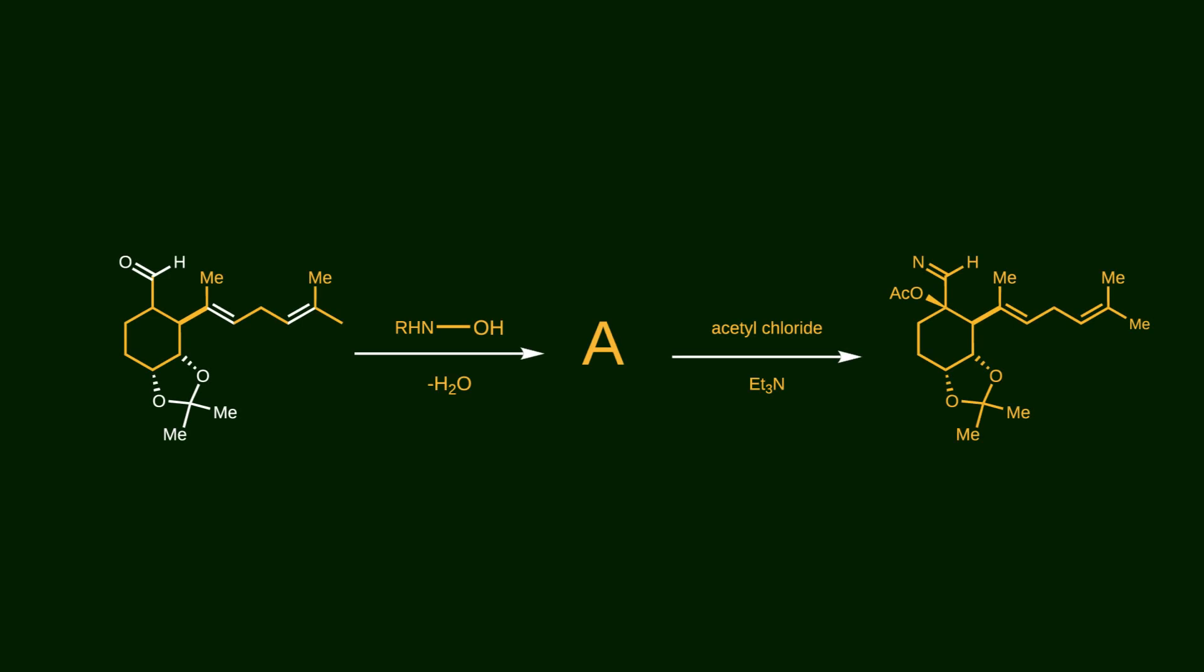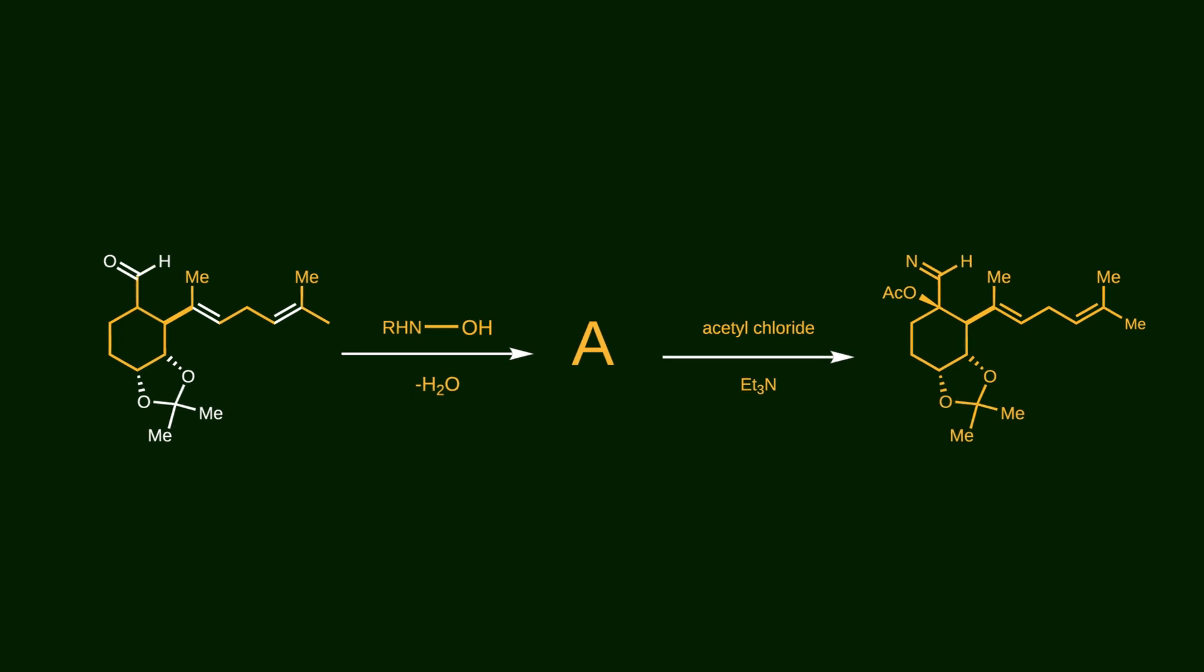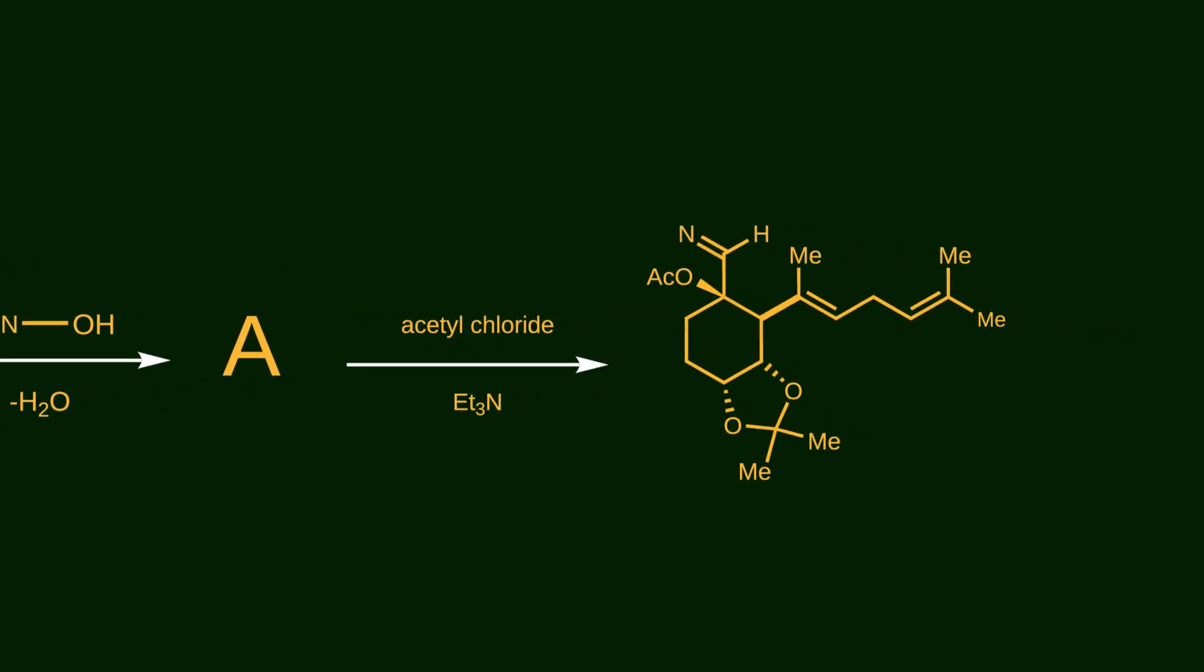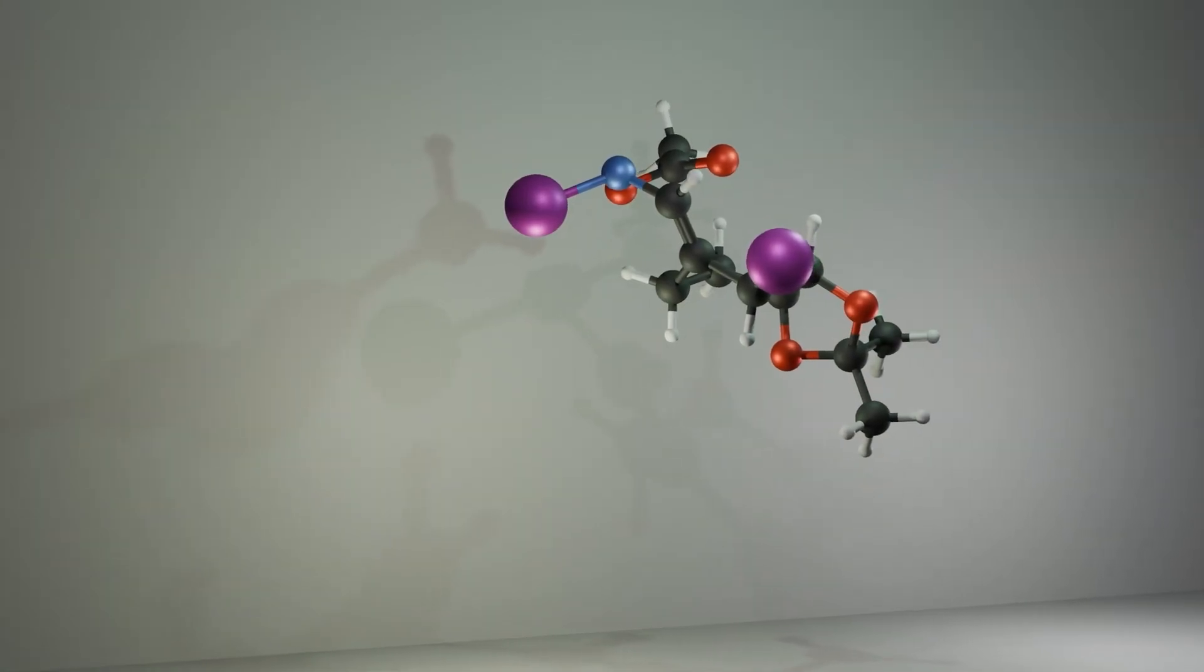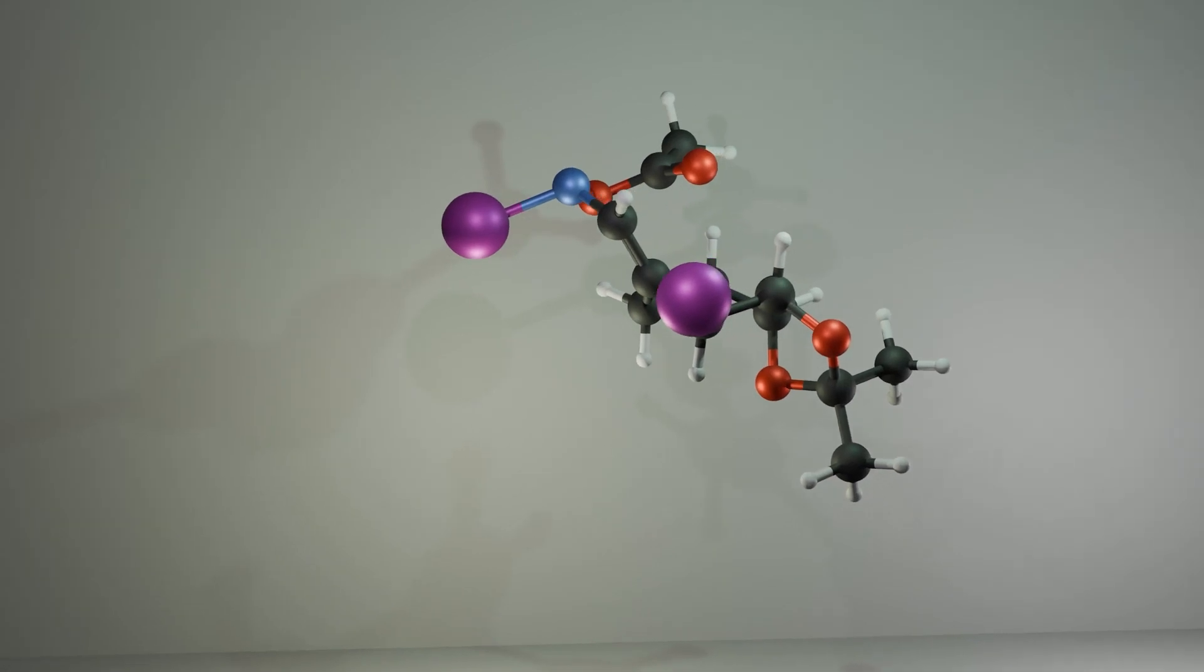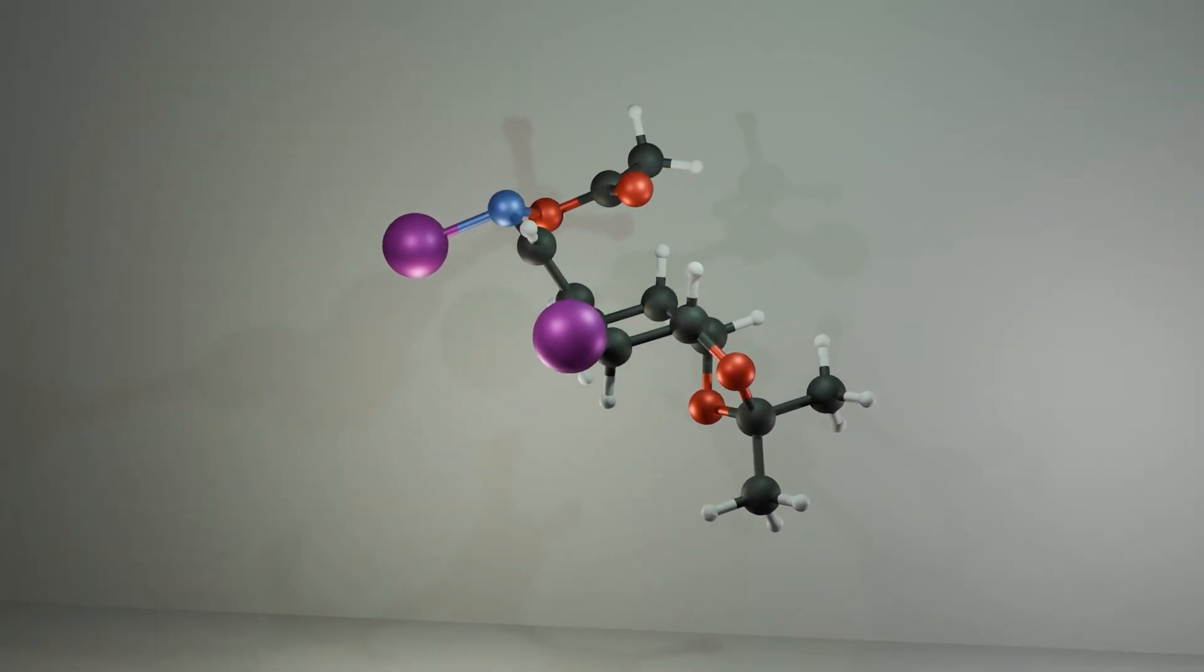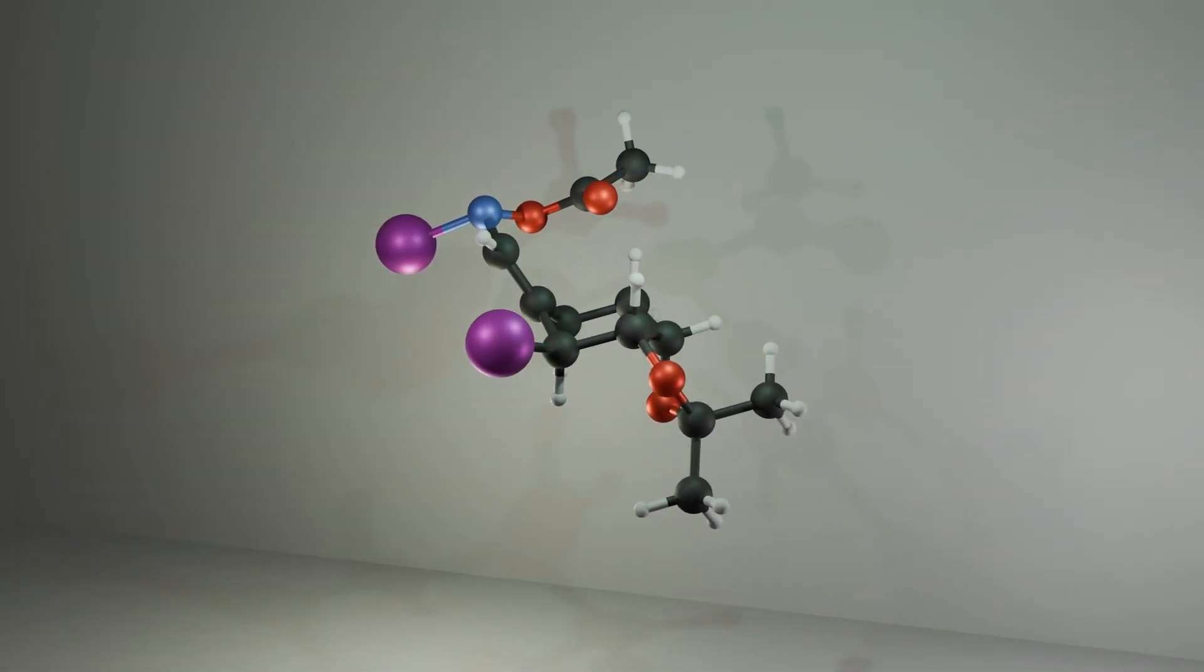Now we understand what the final product is, but an interesting question remains. Let's take a closer look at the final product. As you can see, the acetoxy group is positioned out of the plane, which means stereochemistry plays a key role here. To understand how this stereochemistry is induced, let's move into 3D space and focus on the transition state of the sigmatropic rearrangement.